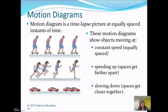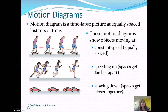A motion diagram is a way to visually look at the motion of an object. It's a time-lapse picture where the pictures are at equal spaces in time. If the object — like the guy on the skateboard — is equally spaced apart, that tells you it's moving at constant speed, because the distance between each frame is the same and the time is the same.